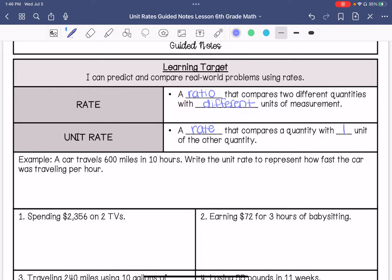So saying that you drove 20 miles per hour is a unit rate you drove 20 miles in one hour. So an example would be a car travels 600 miles in 10 hours. Write the unit rate that represents how fast the car was traveling per hour. So I would do 600 miles over 10 hours. I want to know per hour. So I would divide this by 10 to get one hour. Whatever I do to the bottom, I must do to the top. So this is 60 miles per hour.